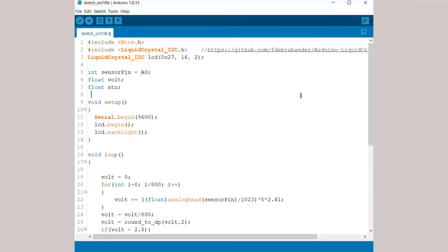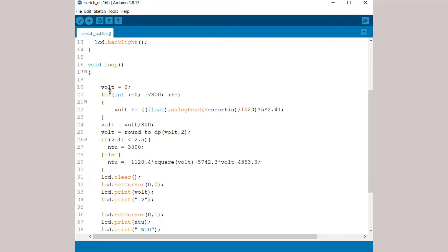Now, let's just see the coding part. We need Wire and LiquidCrystal library for LCD display. Then, we define the Arduino pin to read the sensor value. We define volt and NTU parameters to get the reading. Under void loop function, we are measuring the output voltage from the sensor using this formula. You can see a factor of 2.41. This factor is for calibration.